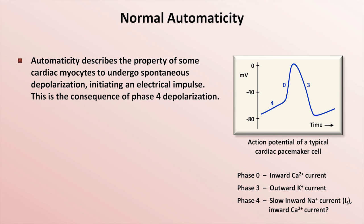If you're wondering what happened to phases 2 and 3, although most cells have these phases, the myocytes which undergo automaticity do not, as a consequence of expressing a different set of ion channels in their membranes.